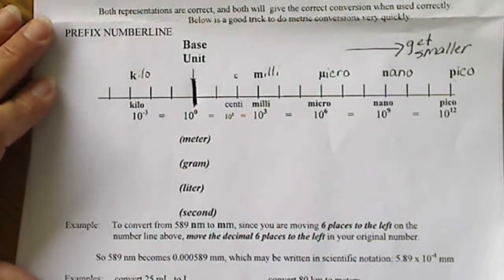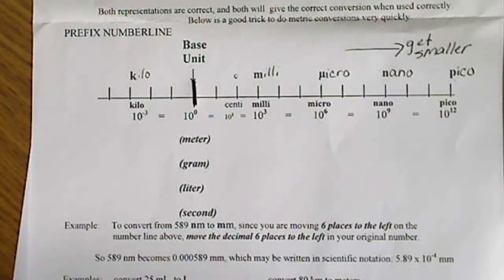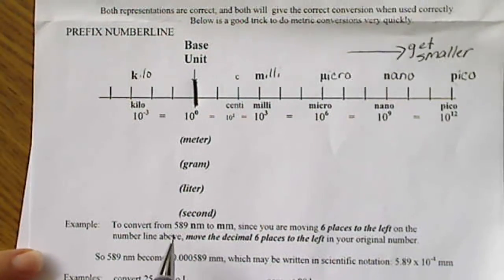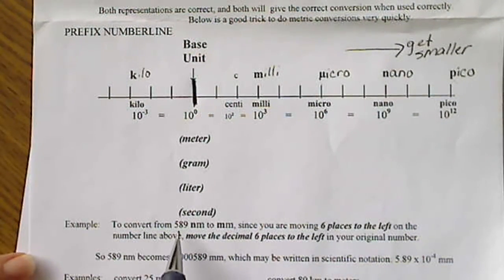And what we're going to do, instead of doing a calculation to convert from one metric unit to the other, we are simply going to move the decimal. And I have an example down here. If we want to convert 589 nanometers to millimeters.